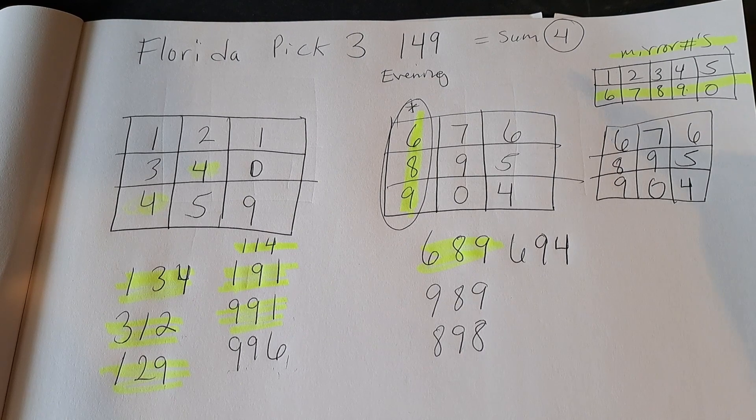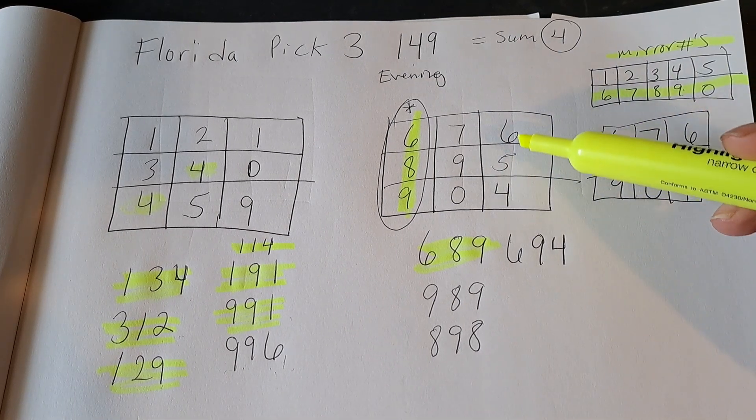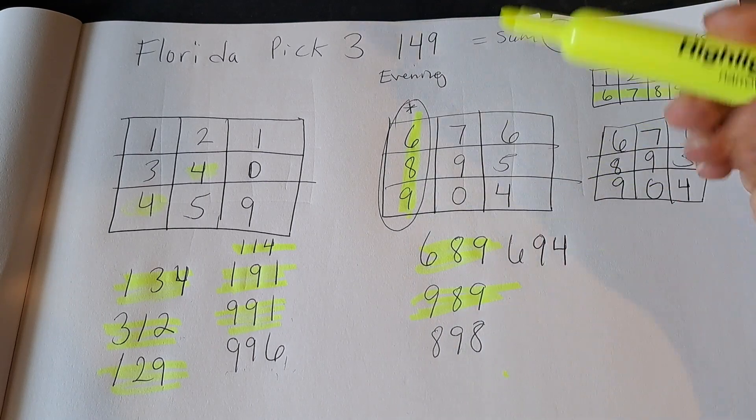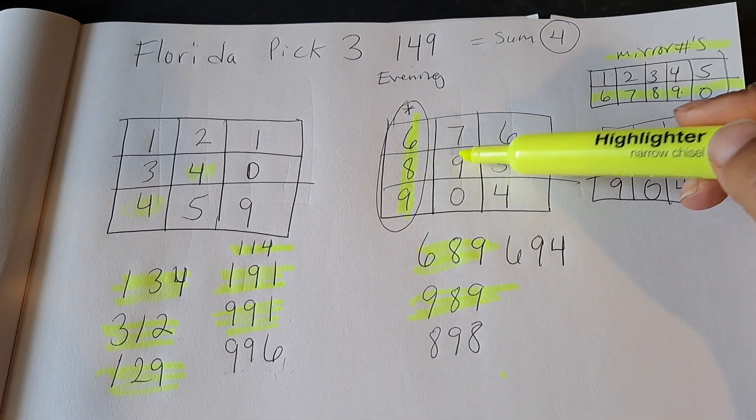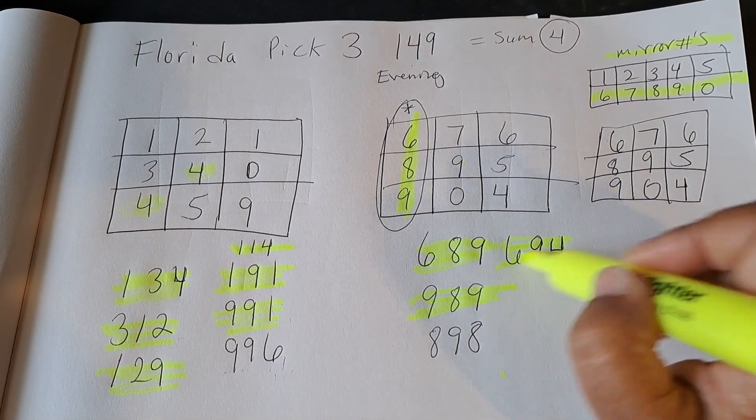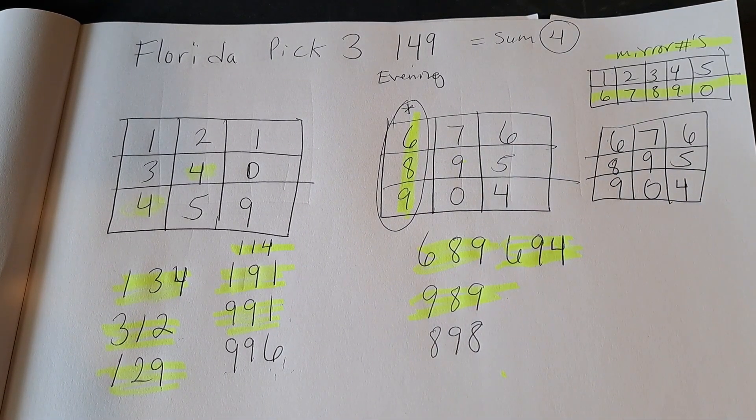Okay. And then over here, I'm really liking that 989. And I put the mate there as well. But I see the 989 right over here. I really like that one. And this is the mirror number of the 149, 694.